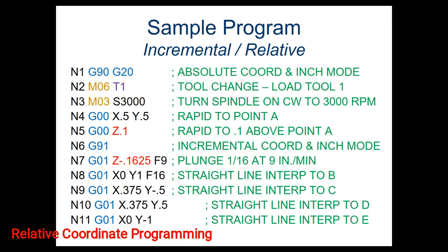When we get to line six, this is where we first do something different — we're going to change from absolute to incremental mode, or relative mode. G91 is that code. Now what it's telling us is everything we do after this point, because we've switched that mode, none of these are absolute coordinates anymore. Everything we're doing is relative to where we are. That's easy to forget, so you're going to have to keep that in mind — everything we're putting in here is relative to our previous position.